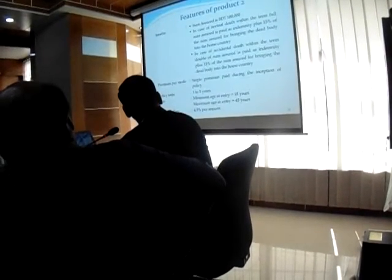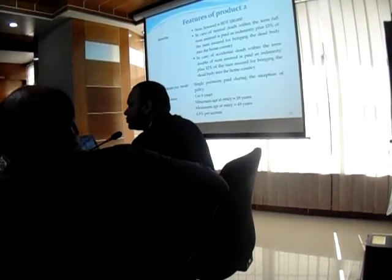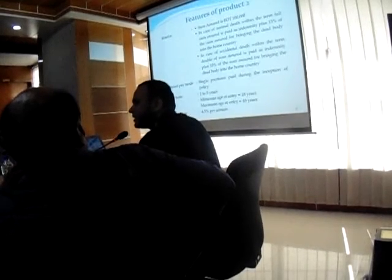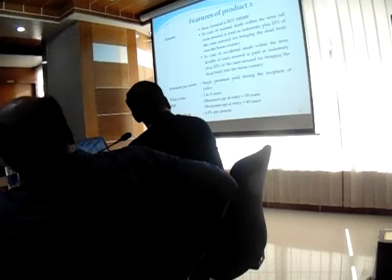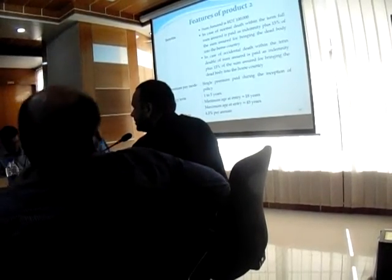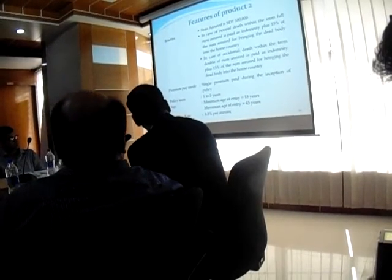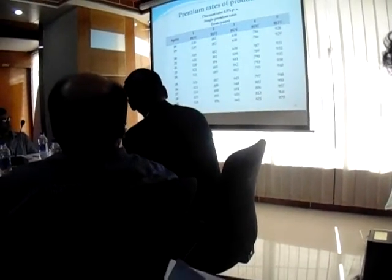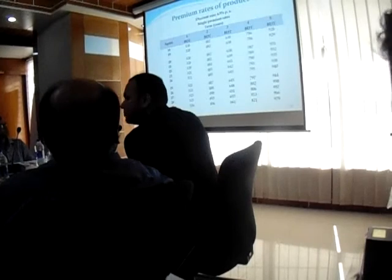That is Product 1. Coming next is Product 2, in which we have covered the accidental death benefit. In this case, the total claim would be double the previous one. If a migrant dies from an accident, the claim amount is doubled, and 50% would be paid for repatriating the dead body to the country. Other features are the same: one to five years, 4.5% discount rate. At age 18, the premium is 320 for covering accidental risk.